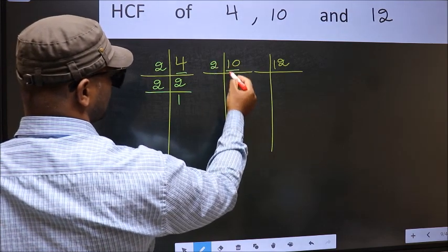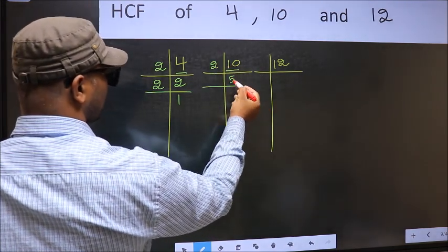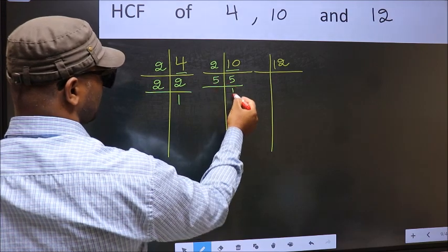10 is 2, 5 is 10. Now 5 is a prime number so 5, 1 is 5.